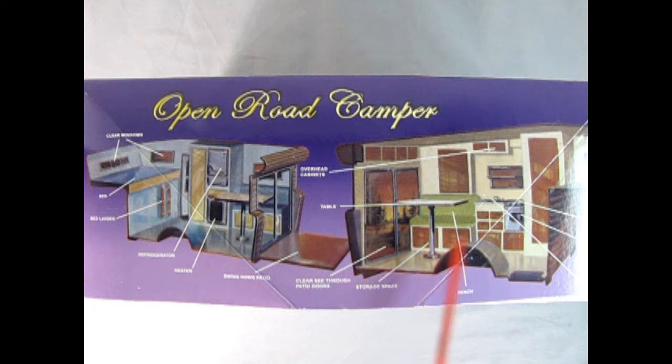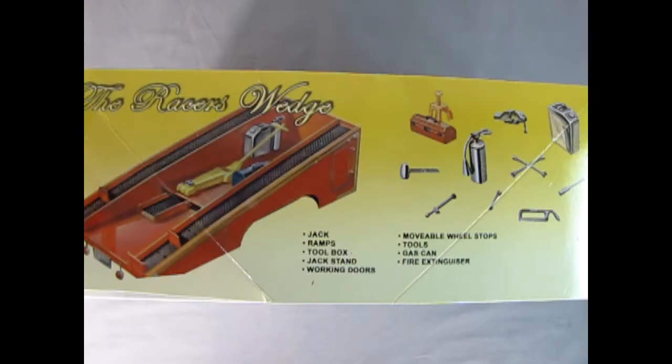Here we have the Open Camper on the side of the box and you can see a lot of great little details in here - tables and fridges and places to store stuff as well as the sleeping quarters, really cool stuff. On the other side of the box we have the Racer's Wedge which includes things like the jacks, the oil cans and gas tanks, little jacks, tool boxes and all the different tools you need in order to race your racing wedge vehicle.